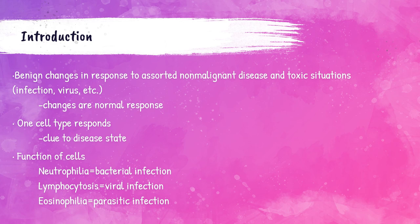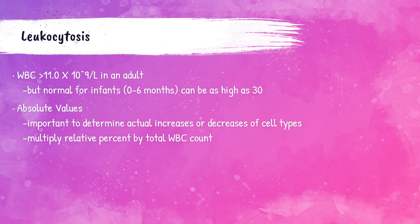The normal leukocyte or white blood cell count is around 4 to 11 times 10 to the 9th power per liter in an adult patient. When the white blood cell count is higher than 11 times 10 to the 9th power per liter, this is called leukocytosis. These values are normal in infants from newborn to 6 months of age — their white cell count can be as high as 30 times 10 to the 9th power per liter and still be considered normal.